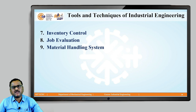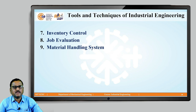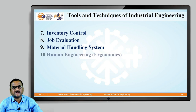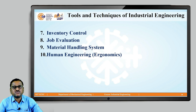The next technique is the material handling system. It is said that to run an industry smoothly, it is required to reach the material as and when required, at the required destination, in the required quantity and quality. The material handling system plays a very important role in the smooth running of the industry. The next technique is human engineering, also found in some books as ergonomics. It deals with the man-machine relationship, which will definitely be helpful to improve productivity.